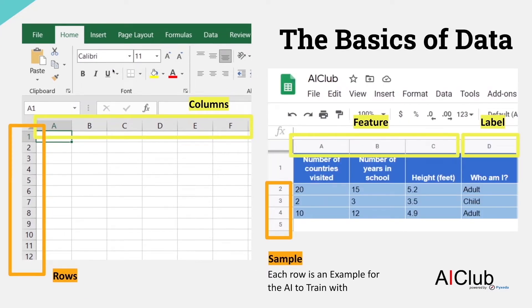Let's take an example dataset. In this dataset, note that the columns are number of countries visited, number of years in school, height, and who am I? You see how the two words feature and label appear right about in yellow color. These are really important two words. You'll be using them quite a lot when you build an AI.